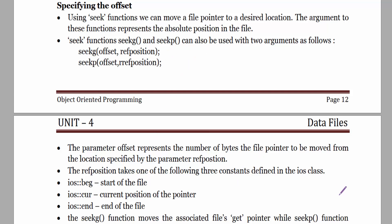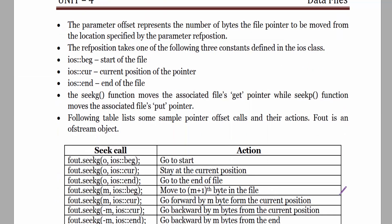The offset represents the number of bytes the file pointer is to be moved from the location specified by the reference position parameter. The reference position can take three values: ios::beg means start of the file, ios::cur means current position of the file pointer, and ios::end means end of the file.